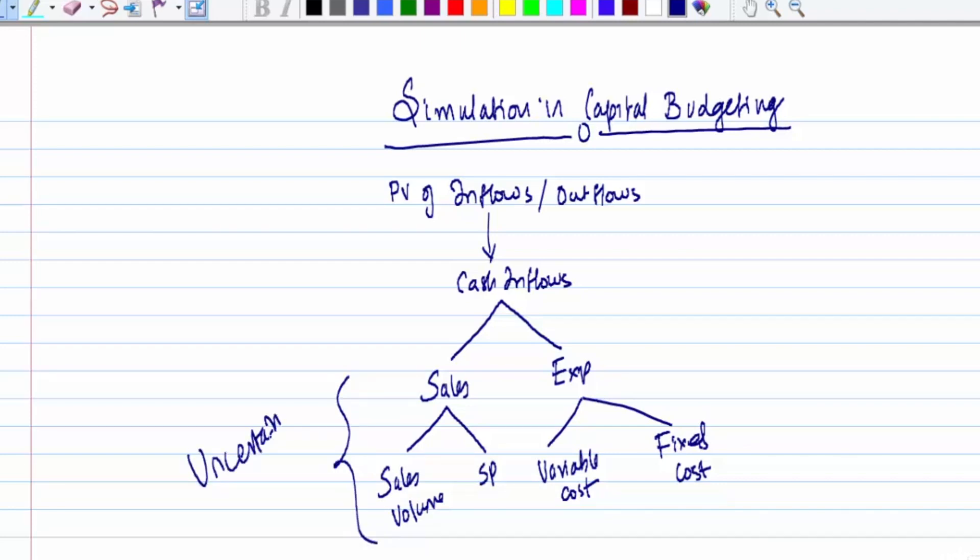You expect things to be good when you estimate cash flows, but these items can be uncertain. These uncertain items while estimating cash flows can be called exogenous variables. But there are certain items which are constant while estimating project cash flows, such as fixed cost or annual fixed cost.